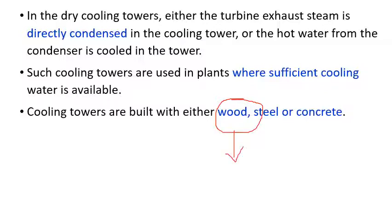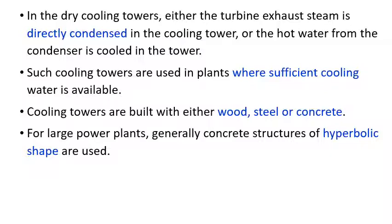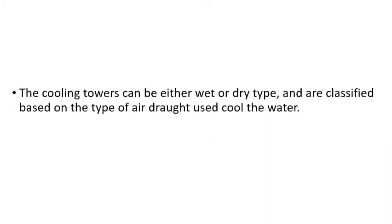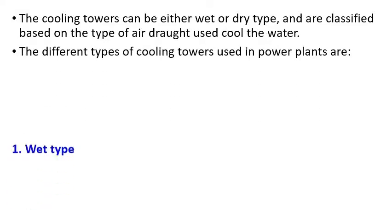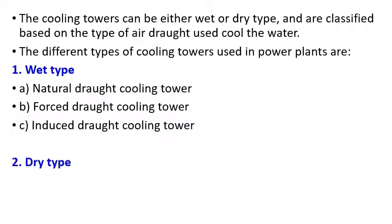The material used for construction should be teak wood or a better composite material, which has now replaced wood. Steel and concrete are also used. Large power plants generally have a hyperbolic structure because it provides sufficient cooling and high cooling capacity. Cooling towers, whether wet or dry, are classified as: wet type — natural draft, forced draft, and induced draft; and dry type — direct and indirect.